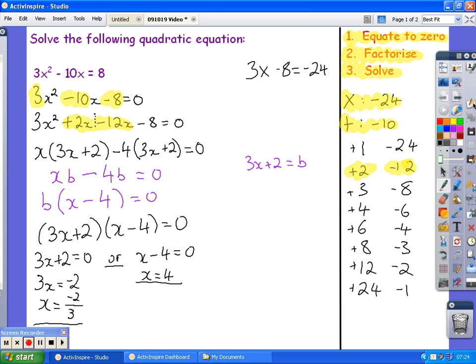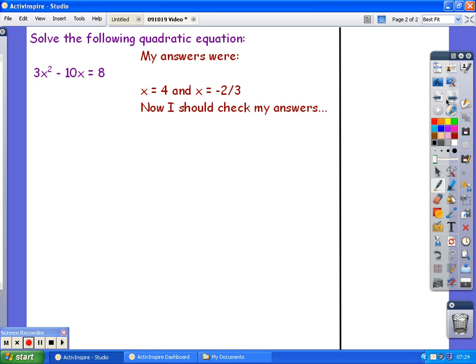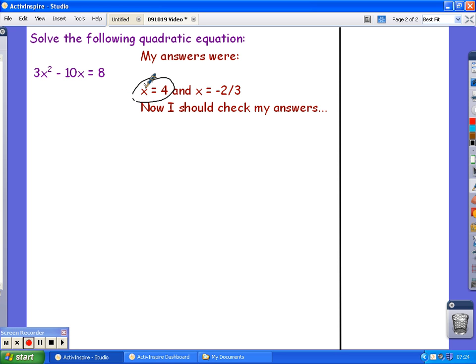Except, we should, of course, always check our answers. So, how do I check? I'm going to take my first value, x equals 4, and substitute it into my original equation. 3x squared subtract 10x equals 8. So, here we go.